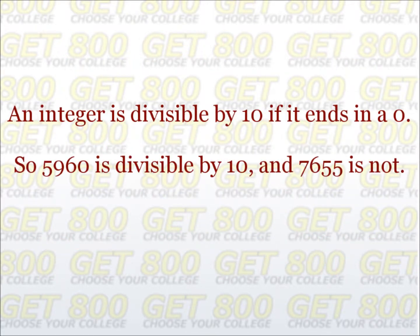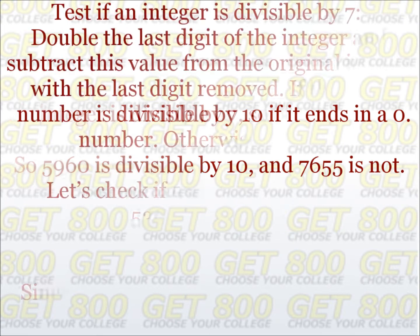An integer is divisible by 10 precisely if it ends in a 0. So, for example, 5,960 is divisible by 10, but 7,655 is not. As far as the SAT is concerned, those are the only tricks that you really need to know. But just for fun, let's do a few more.